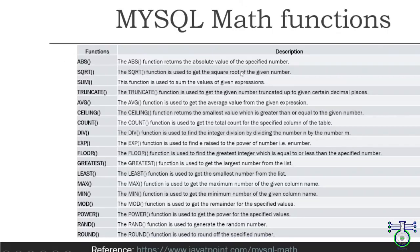Next topic is MySQL math functions. There are pretty well-known functions which are already present that you can use to get your result. The first is ABS. The ABS function returns the absolute value of a specified number. You can use ABS() — inside ABS you write a number. If you write a minus number, it will change this number to its absolute value — without a negative sign, meaning it just changes your number to a positive number.